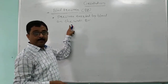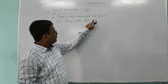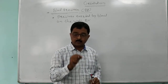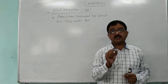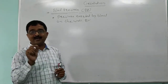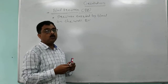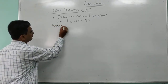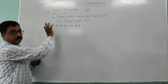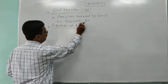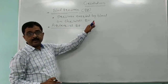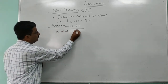This definition — pressure exerted by blood on the wall of the blood vessels — applies to all blood vessels. But when we measure blood pressure in man, we measure it from the arteries, because pressure is maximum there. So we use the term arterial blood pressure, which is the pressure exerted by the blood on the wall of arteries.